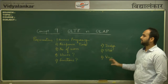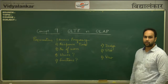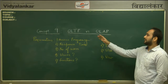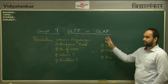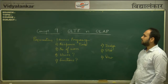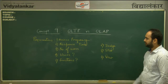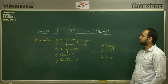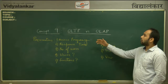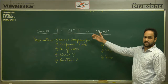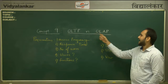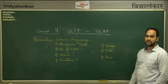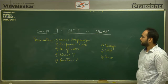There are 8 different parameters on which we can compare OLTP and OLAP. The first one is access frequency. Access frequency of a database (OLTP) is high, whereas access frequency of a data warehouse (OLAP) is low.